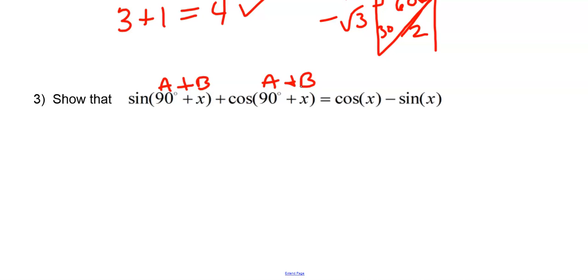So sine of 90 plus x, sine of A plus B would be sine A, so sine of 90, cosine of B, cosine of x, plus cosine of 90, sine of x.